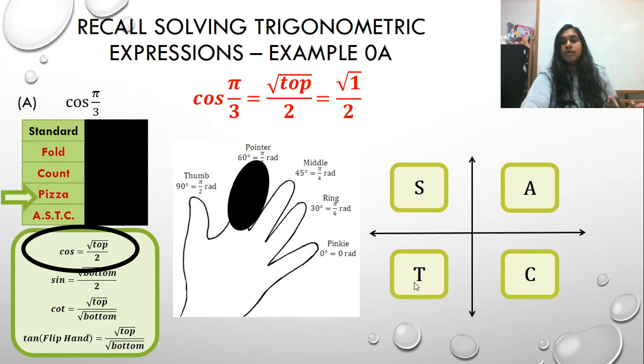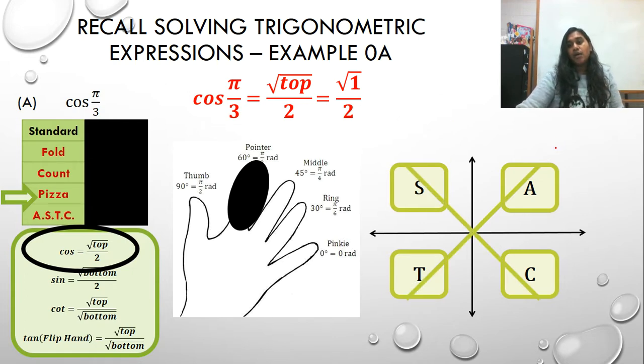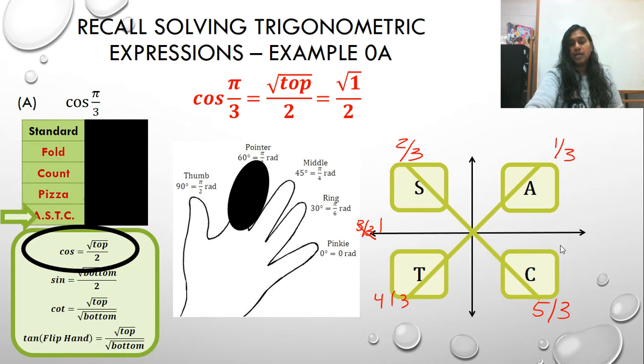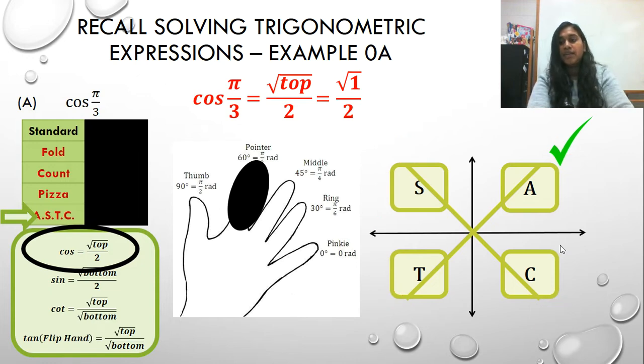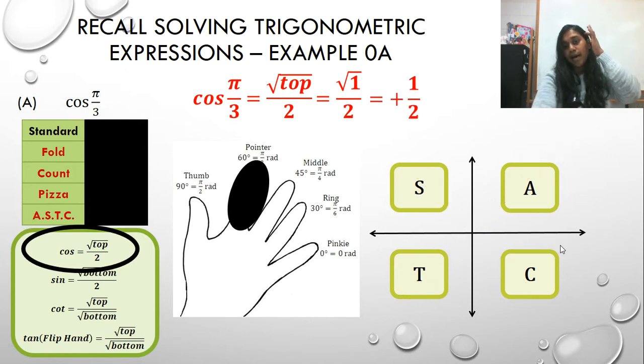The next thing I have to do is figure out whether or not my answer is positive or negative. That's the purpose of the pizza and Azteca step, deciding which quadrant you're in and whether it's positive or negative. Well, cosine of pi over 3, if I cut up all of my quadrants into thirds, then this becomes 1 third and 2 thirds. And I know that for my value of pi over 3, that we're actually in this quadrant right here, because that's 1 third. And so, since everything is positive, A, all are positive, then my answer has to be a positive square root of 1 over 2, which is just a positive 1 half.